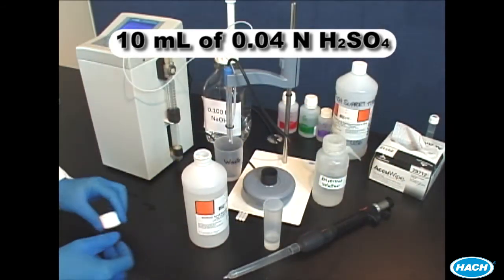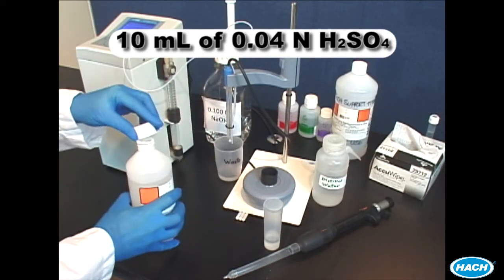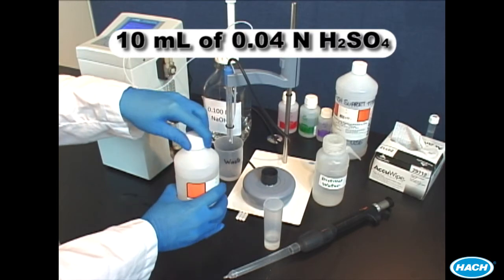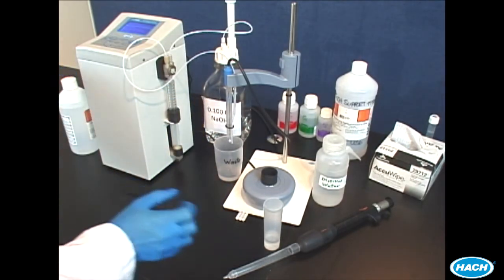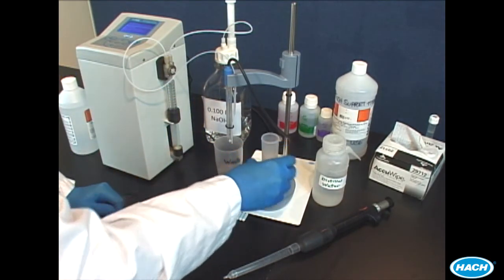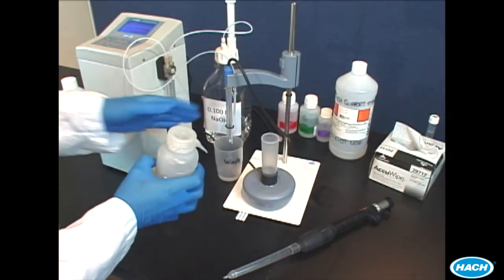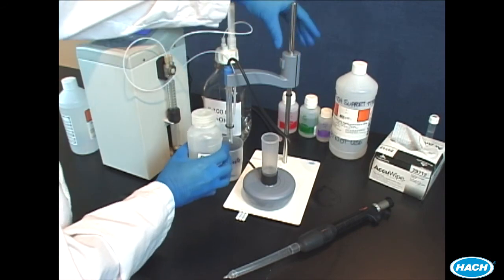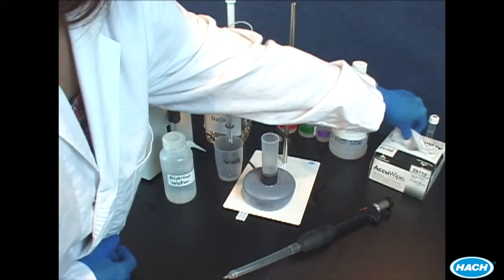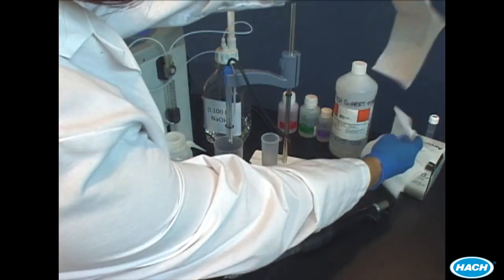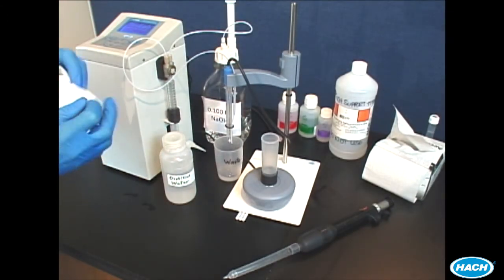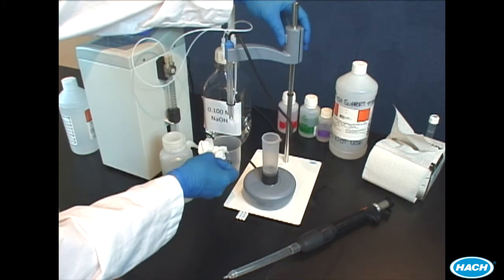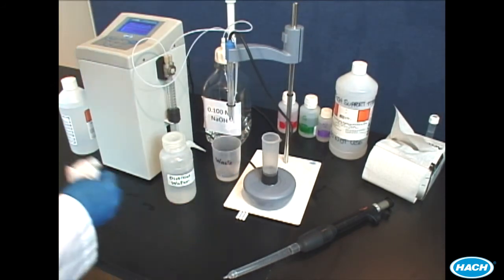Add 10 mL of 0.04 normal sulfuric acid standard to the titration cell and place the cell in the stir stand. Rinse the pH electrode with clean water. Add a stir bar to the titration cell.